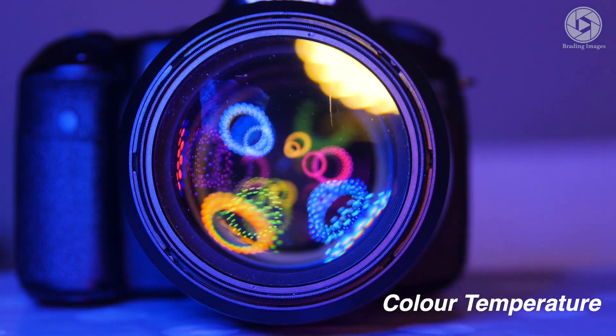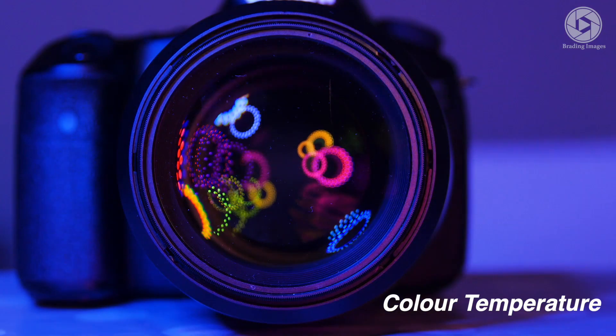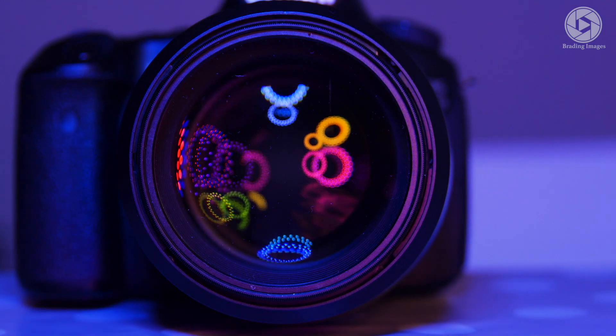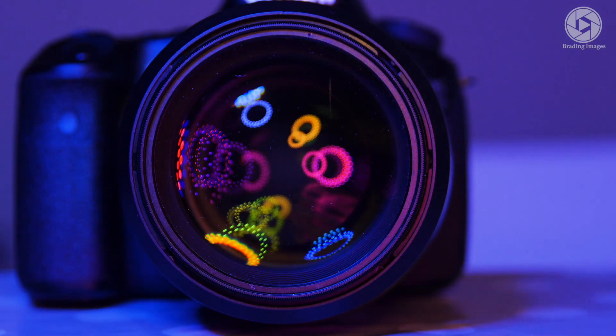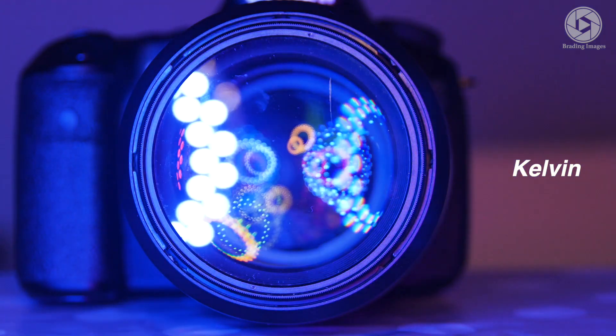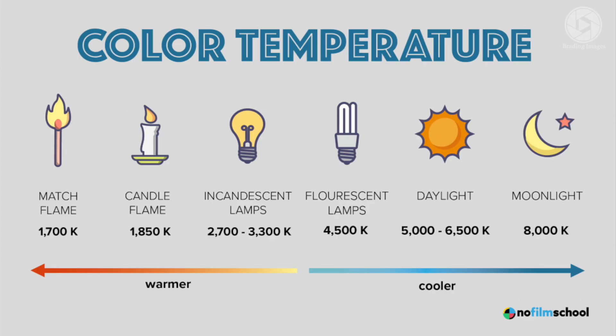Color temperature is how we can measure what shade of white is being produced by a specific light, and is measured in Kelvin. It ranges from candlelight at 1,000 Kelvin to a blue sky at 10,000 Kelvin.